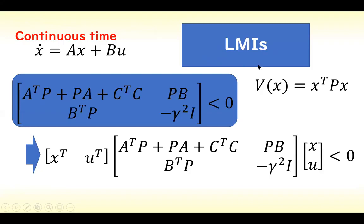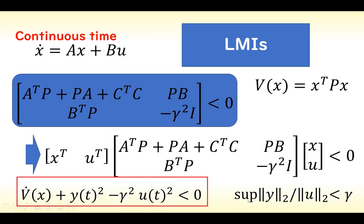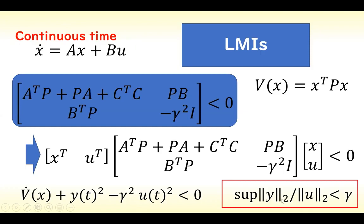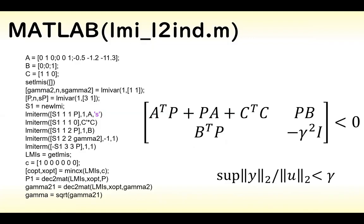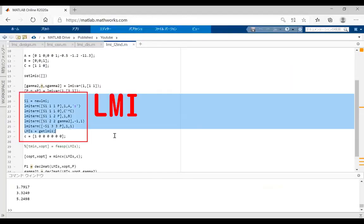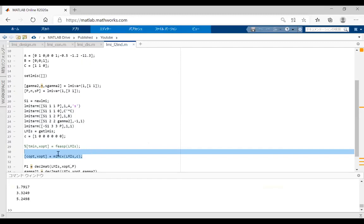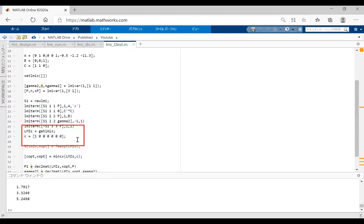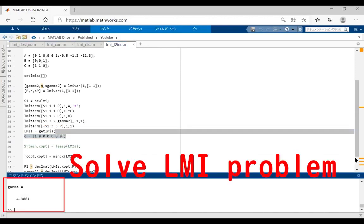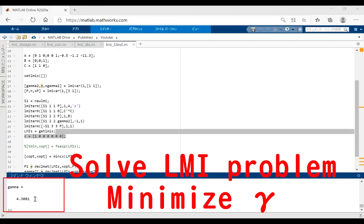Next, we consider the L2-induced norm by solving LMI problems. If this LMI holds and P is positive, then we can obtain this inequality and we can prove the L2-induced norm is smaller than gamma. So we minimize gamma to analyze the control system. This is the MATLAB code to analyze the L2-induced norm of a control system. These are the plant parameters and these lines show the LMI formula. We solve the LMI using minCx and add C to evaluate gamma, then solve the problem and obtain the minimum gamma.